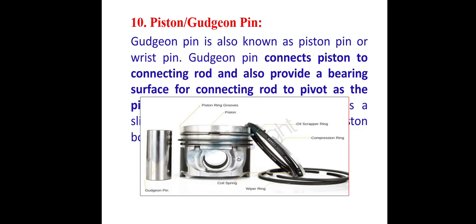Next is the piston and gudgeon pin. The gudgeon pin is also known as a piston pin or wrist pin. It connects the piston to the connecting rod and provides a bearing surface for the connecting rod to pivot.